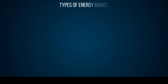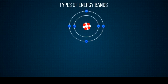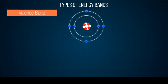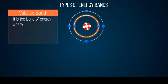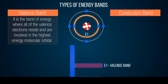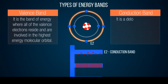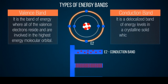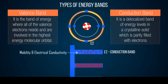Types of energy bands. The first one is the valence band. It is the band of energy where all the valence electrons reside and are involved in the highest energy molecular orbital. The second one is the conduction band. It is a delocalized band of energy levels in a crystalline solid which is partly filled with electrons. These have great mobility and are responsible for electrical conductivity.